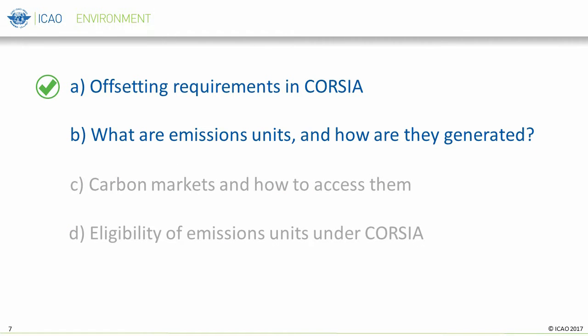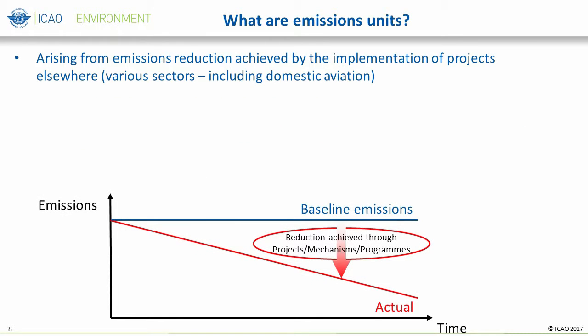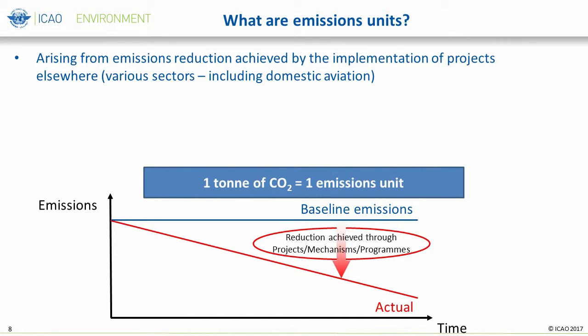We just talked about cancelling emissions units to meet offsetting requirements — but what exactly are emissions units? The concept originates from an emissions reduction achieved by the implementation of specific projects. These projects can be derived in various sectors within and outside of the aviation sector. One emissions unit is equivalent to the reduction of one metric ton of CO2. Therefore, one emissions unit represents the reduction of one ton of CO2 as a direct result of the implementation of that project or program, compared to the absence of that project — also referred to as the baseline emissions.